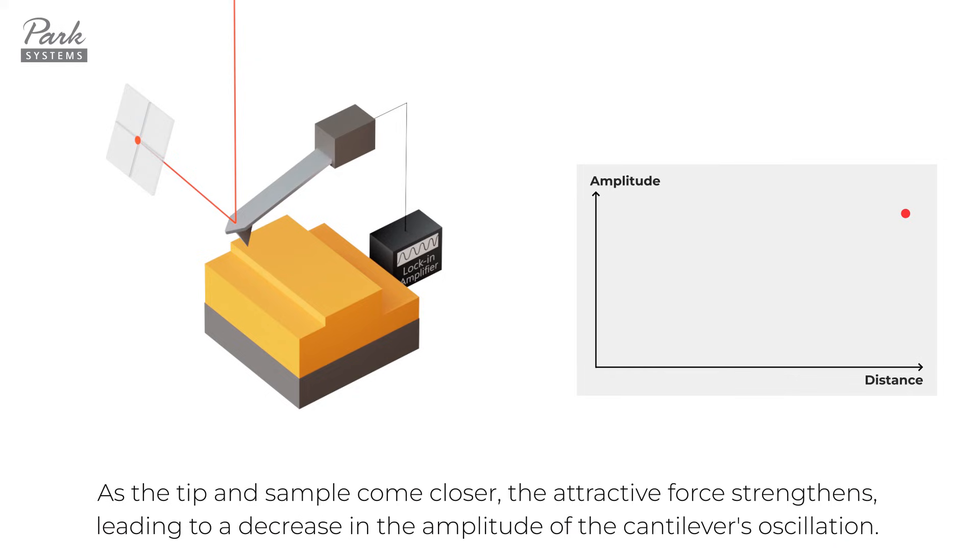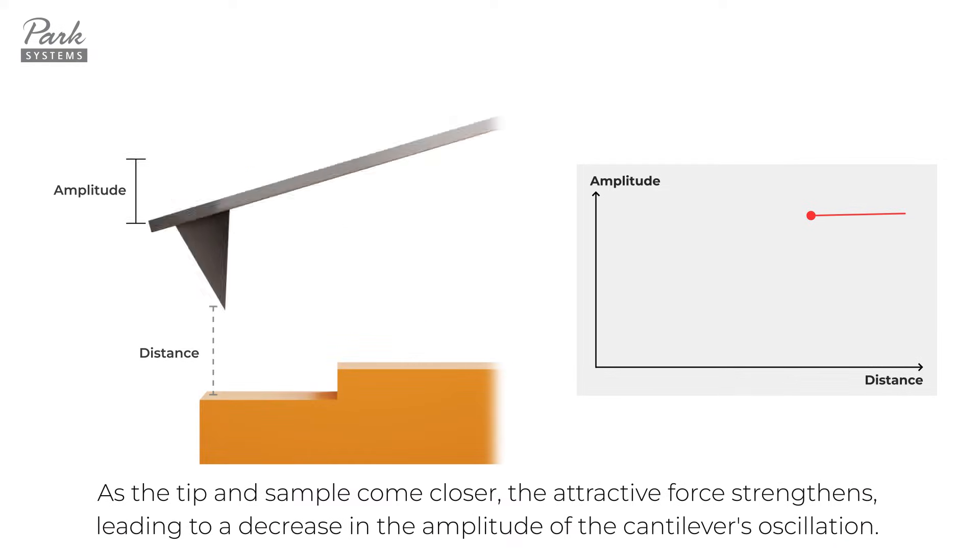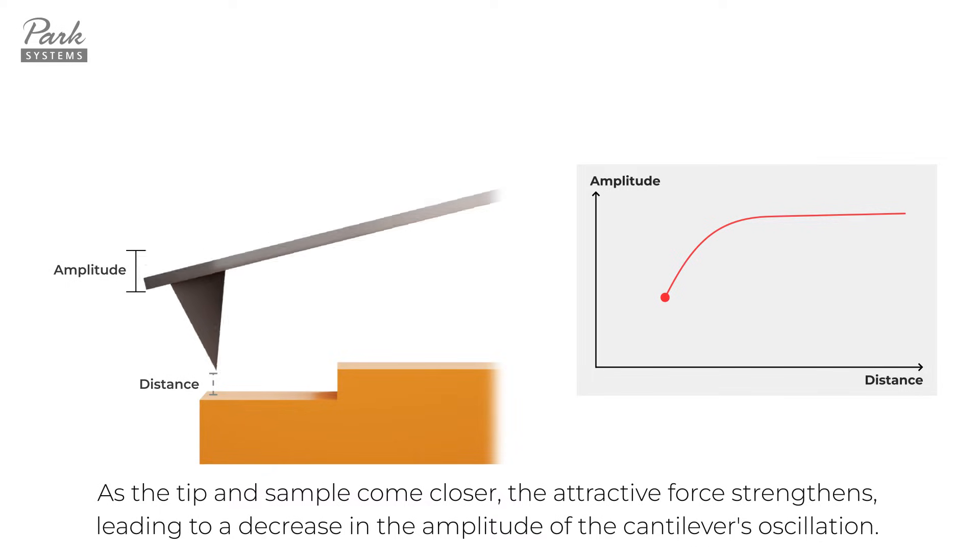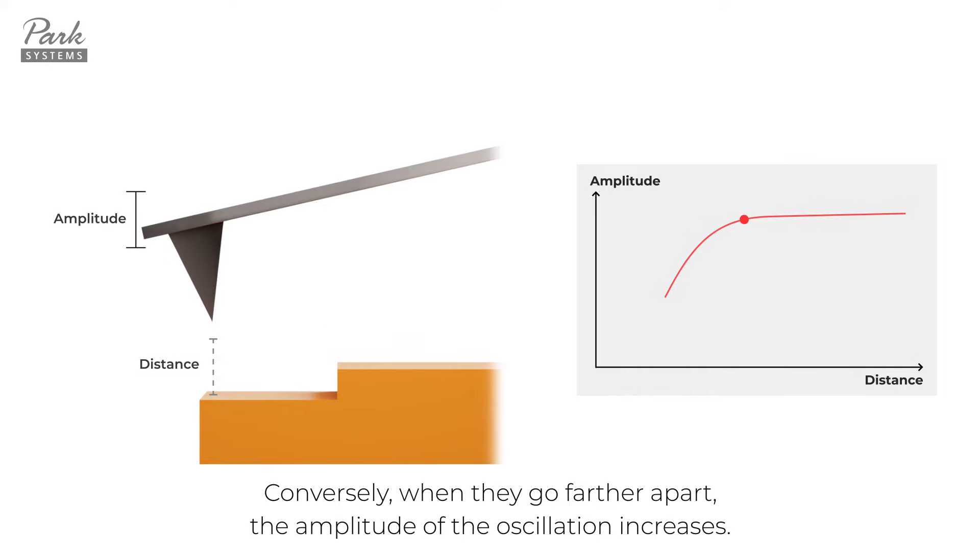As the tip and sample come closer, the attractive force strengthens, leading to a decrease in the amplitude of the cantilever's oscillation. Conversely, when they go farther apart, the amplitude of the oscillation increases.